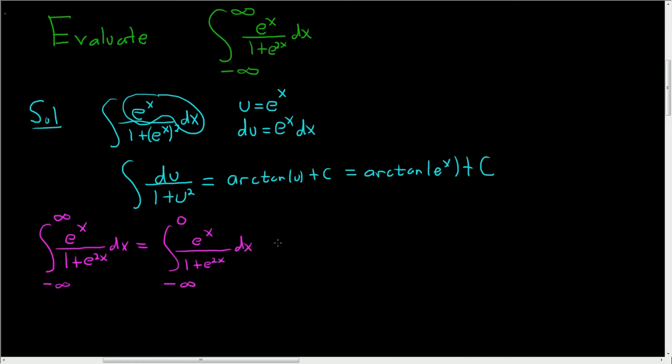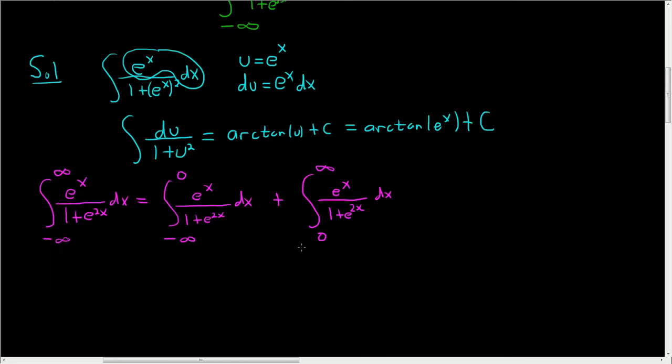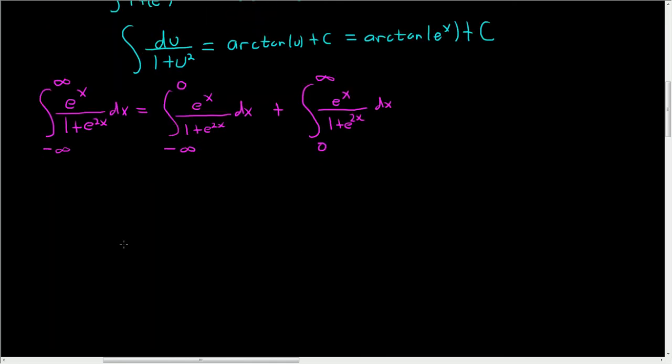Why 0? 0 is a convenient number for this problem. And then 0 to infinity, e to the x over 1 plus e to the 2x dx. Let's keep going very very carefully. You have to watch the notation when you do these problems.